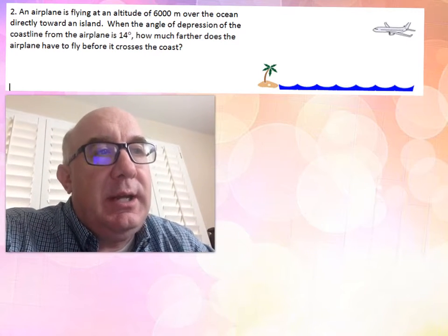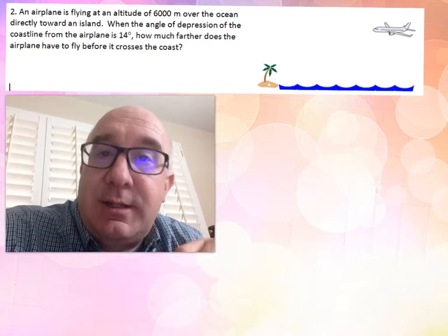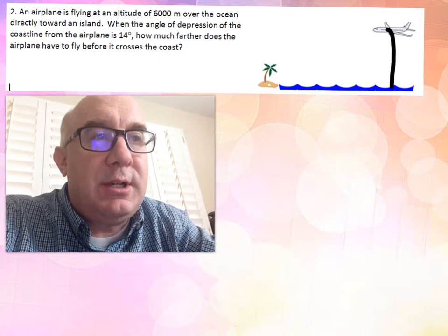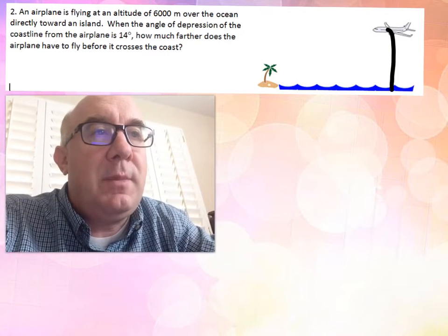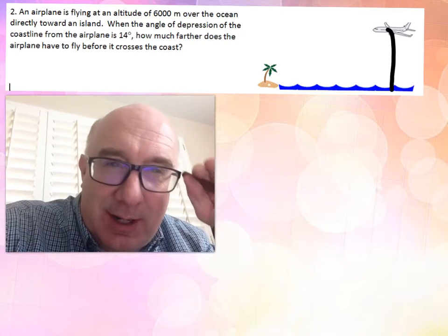First of all, an altitude is height. So for a plane at 6000, your 6000 is right here—that's your height. Then it says it looks down at an angle of depression.